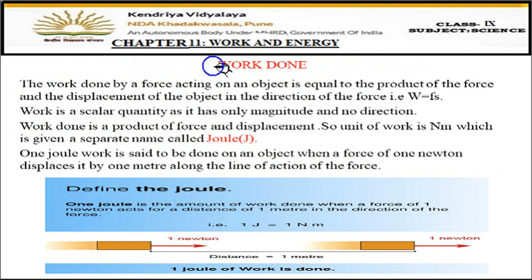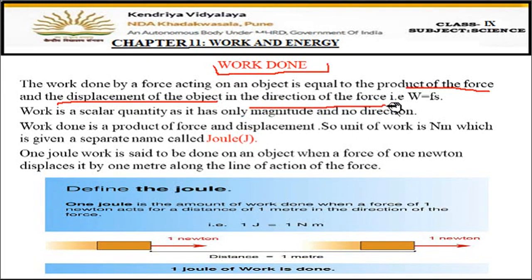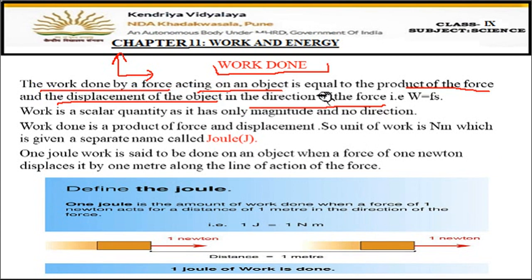Work done by a force acting on an object is equal to the product of the force and the displacement of the object in the direction of the force: W = F × S. Displacement must be in the direction of the force for work to be positive. If displacement is not in the direction of force — when they are perpendicular — work done becomes zero. Work is a scalar quantity: it has only magnitude and no direction.